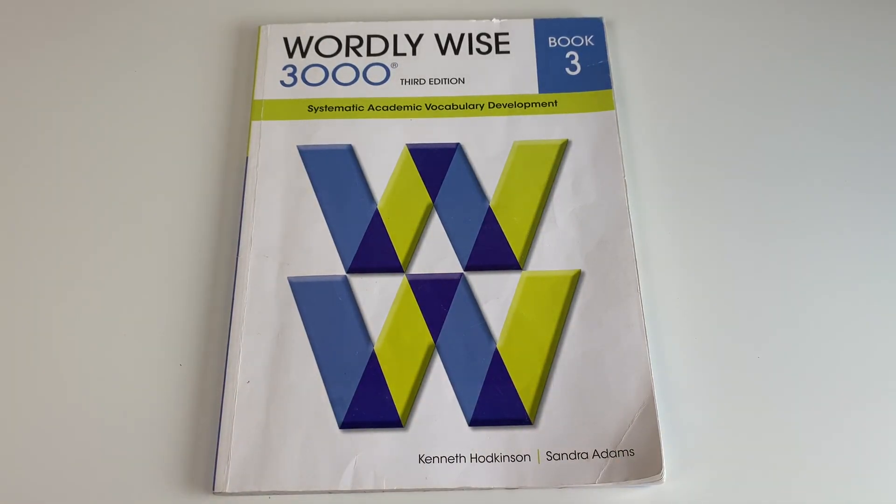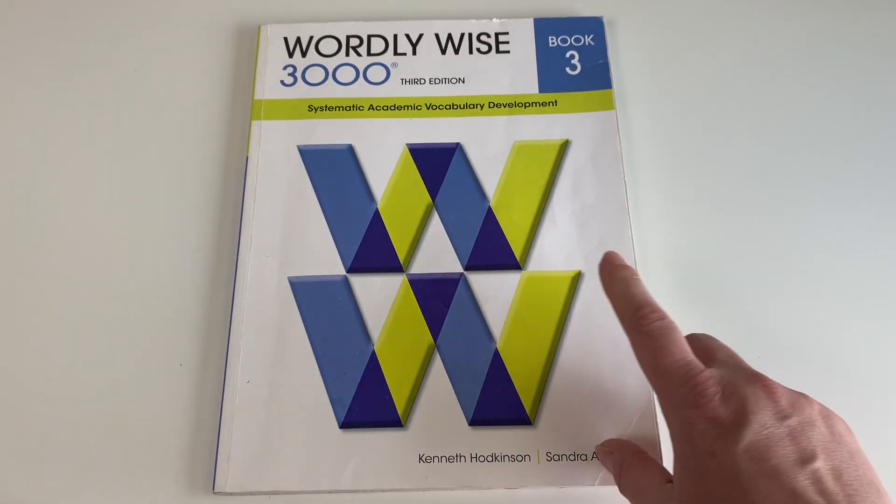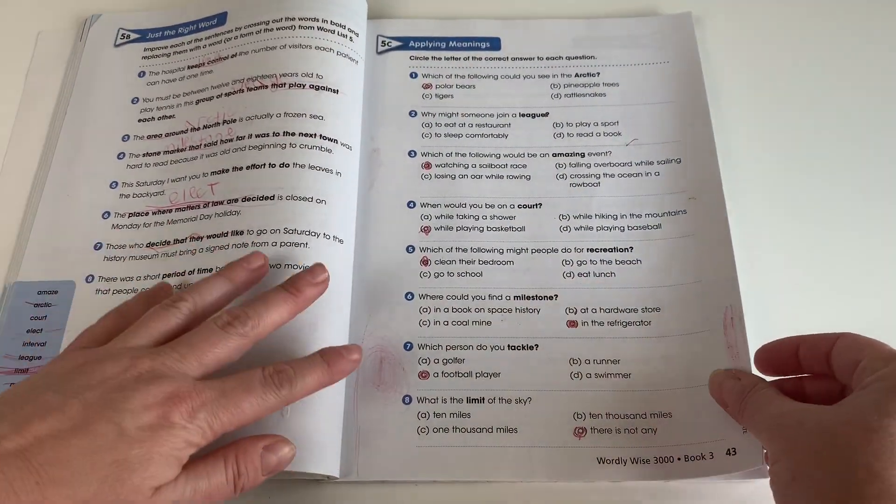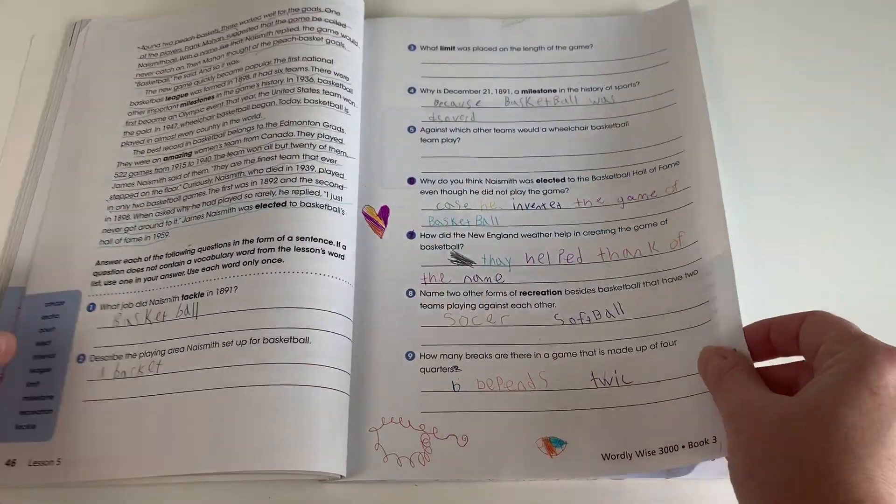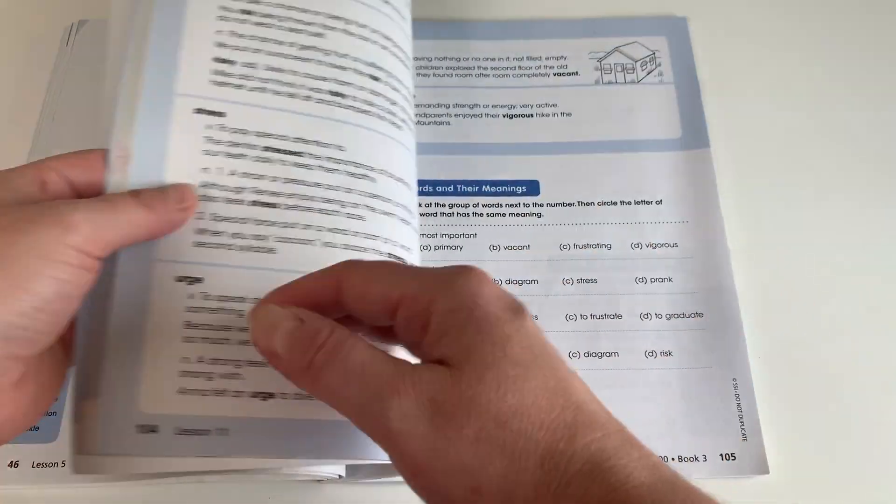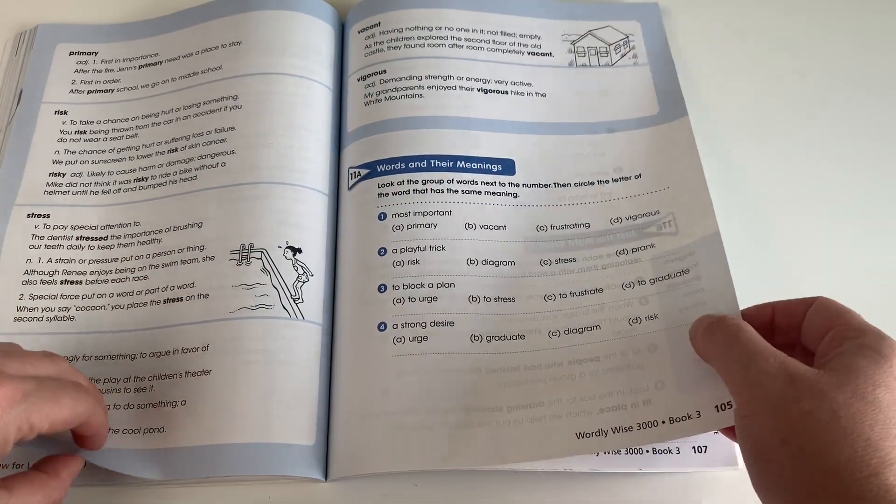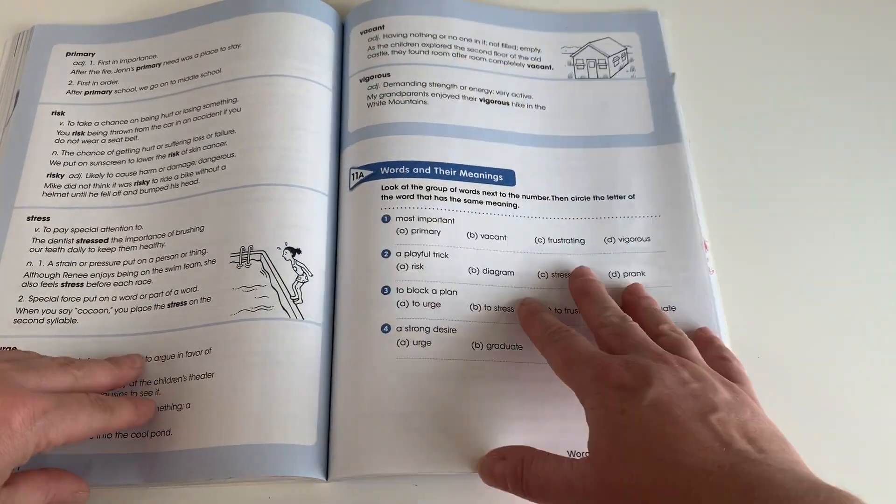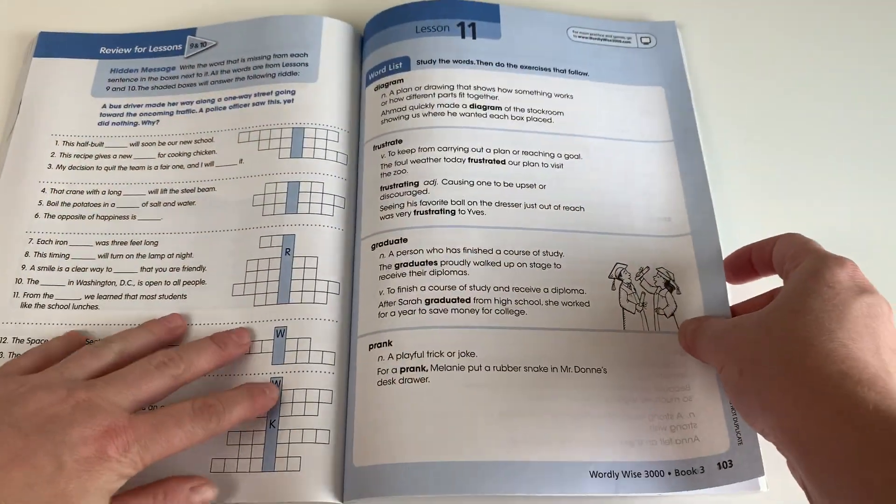For vocabulary building, she'll be continuing on with Wordly Wise Book 3. This program is definitely a little intense. It has a lot of vocabulary words every single week, and then they answer questions about the words and have a reading passage to focus on the vocabulary words.